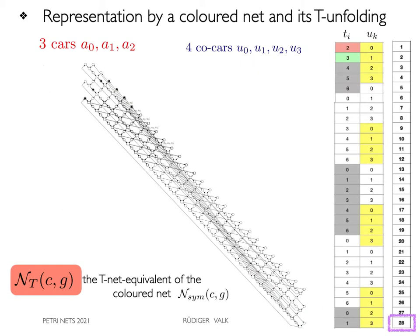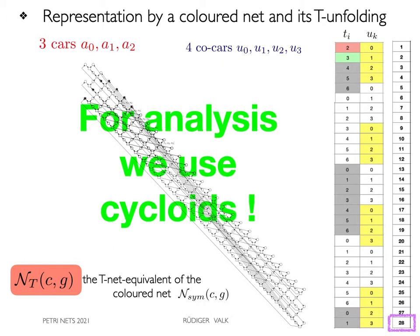The entire T-net has 3 times 28 equals 84 transitions and is quite complex in the general case. Fortunately, we could prove that it is isomorphic to a particular type of cycloid for which a theoretical basis has been developed. Therefore, for analysis, we use cycloids.